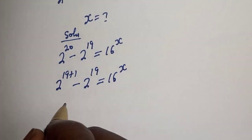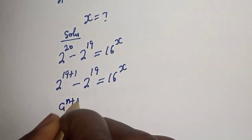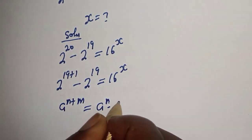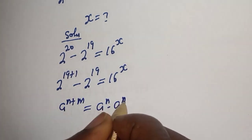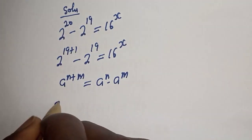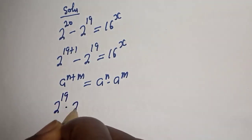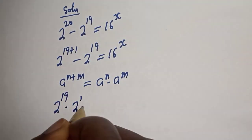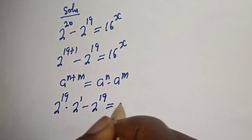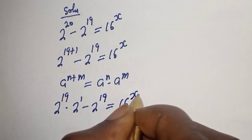Take note: if you have a raised to power n plus m, this is equal to a raised to power n multiplied by a raised to power m. Applying this rule, we get 2 raised to power 19 multiplied by 2 raised to power 1, minus 2 raised to power 19, is equal to 16 raised to power x.